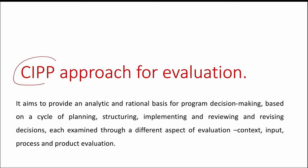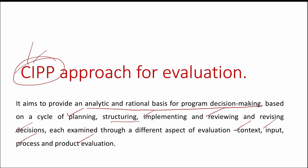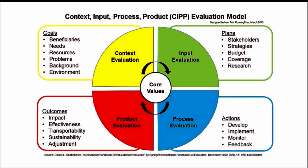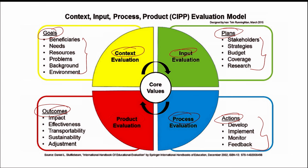What is the CIPP approach for evaluation? The CIPP approach aims to provide an analytic and rational basis for program decision-making, based on a cycle of planning, structuring, implementing, reviewing and revising decisions, each examined through a different aspect of evaluation. CIPP stands for: Context — we evaluate the goals; Input — we evaluate the plans; Process — we evaluate the actions; and Product — we evaluate the outcomes.